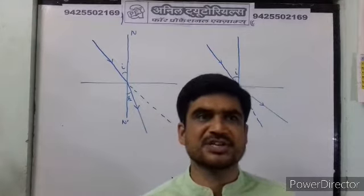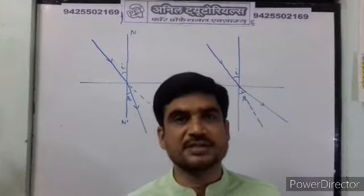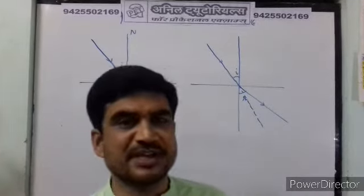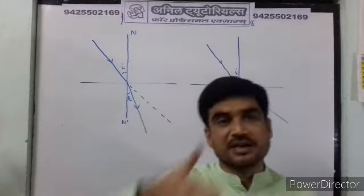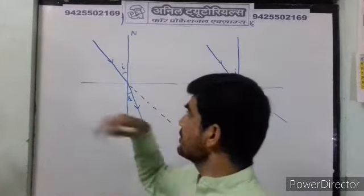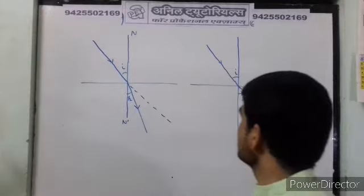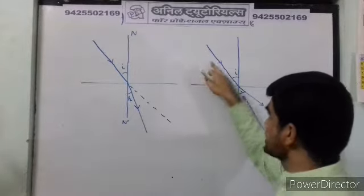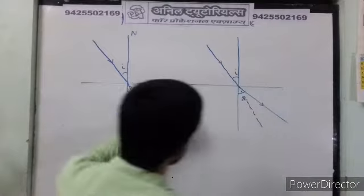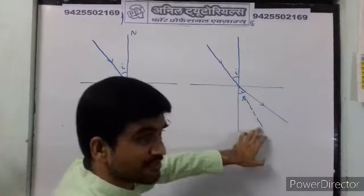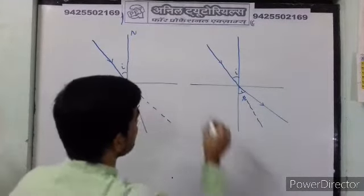Today, we will see some consequences of refraction. In the last period, we saw that when the light ray propagates from a denser medium to a rarer medium, it does not follow the original path — it moves away from the normal.